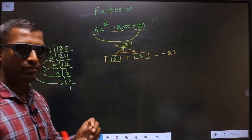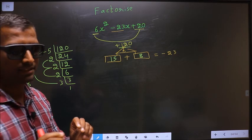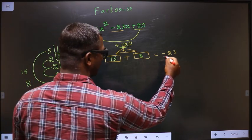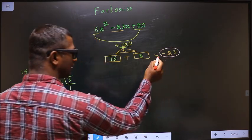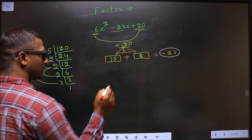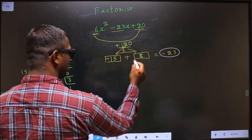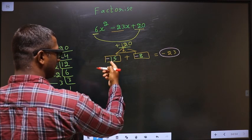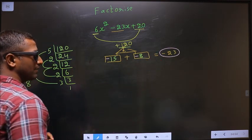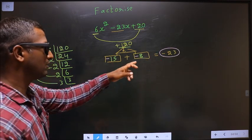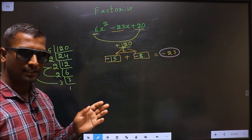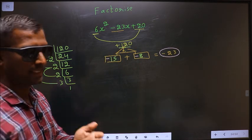Now, we should adjust the signs. Here, we should get minus 23. That could only happen if we place negative here and also here. Minus 15 minus 8 is minus 23. Minus 15 into minus 8 is plus 120. Signs are adjusted now.